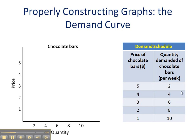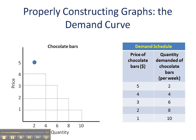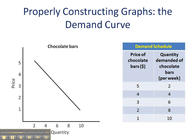We're going to take our information from our demand schedule and plot our points. The first point is at a price of 5, where two chocolate bars are demanded — so we find our 5-2 point and place a dot there. We're going to find our next five points and establish those. Then we find a line of best fit, and there we have our downward sloping demand curve accurately constructed based on our demand schedule.